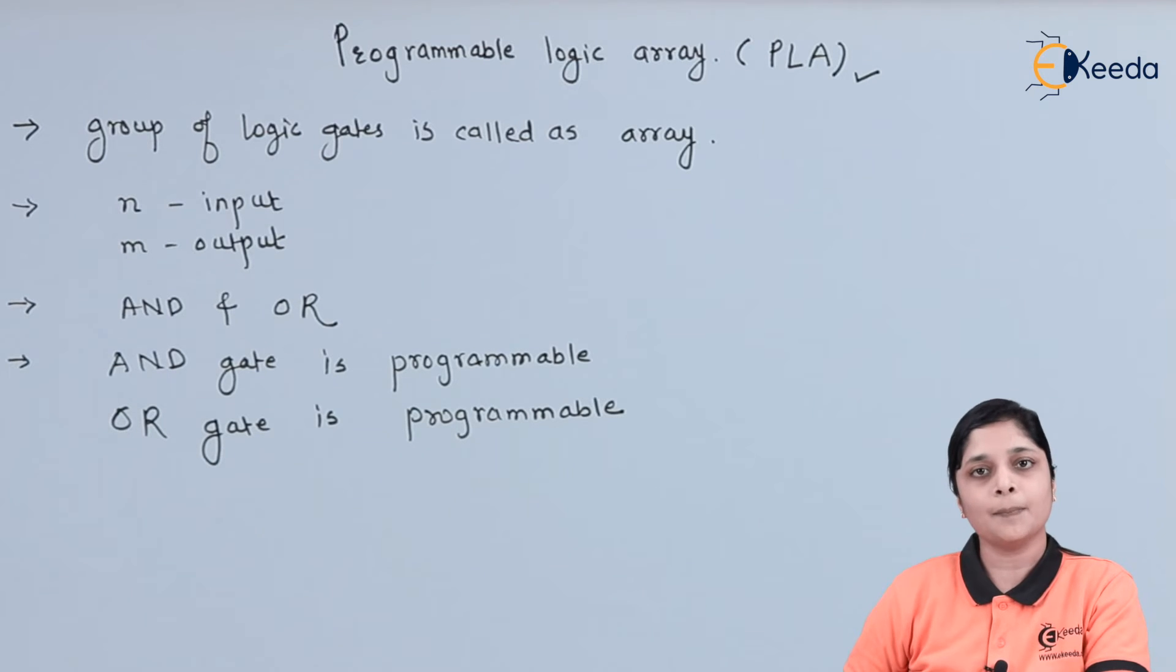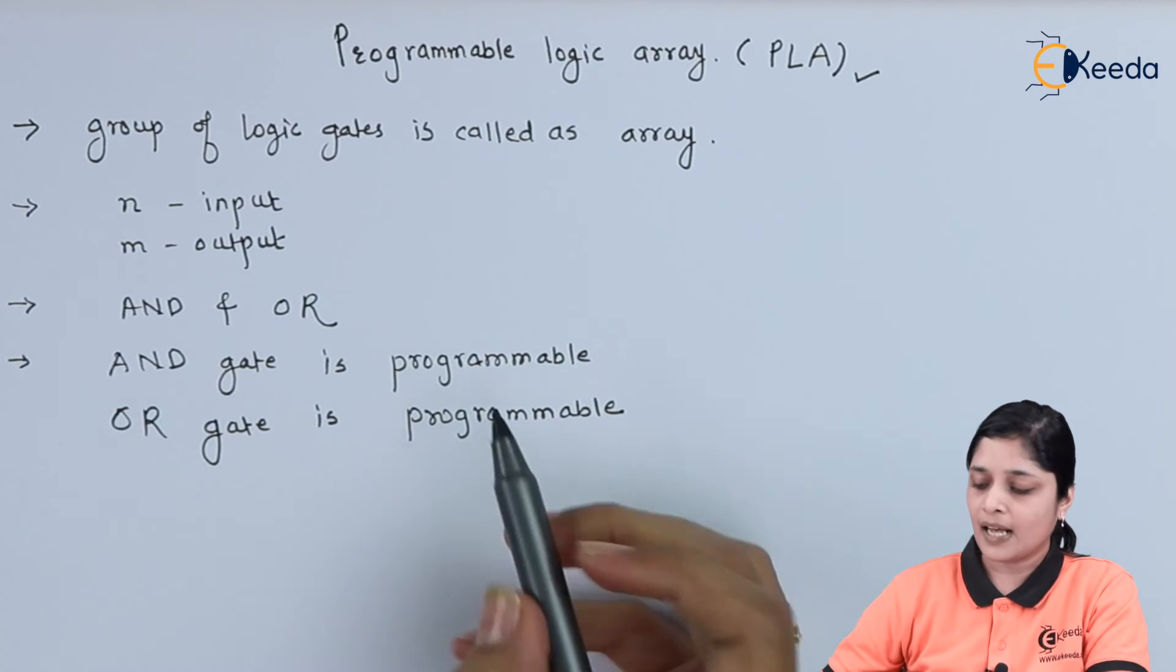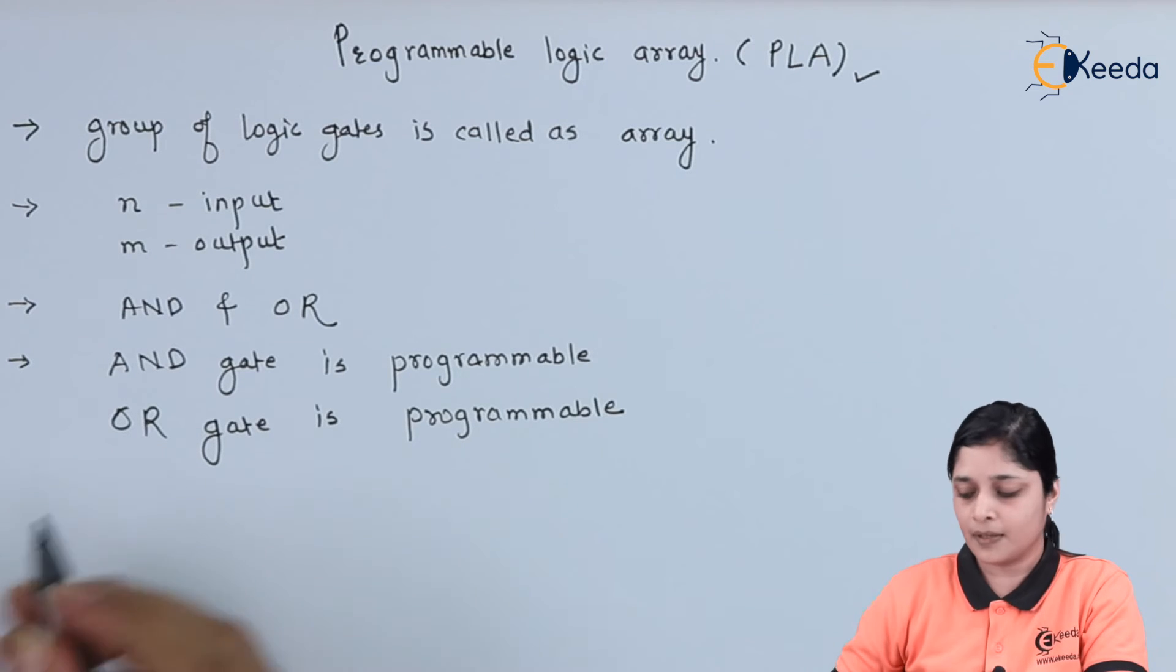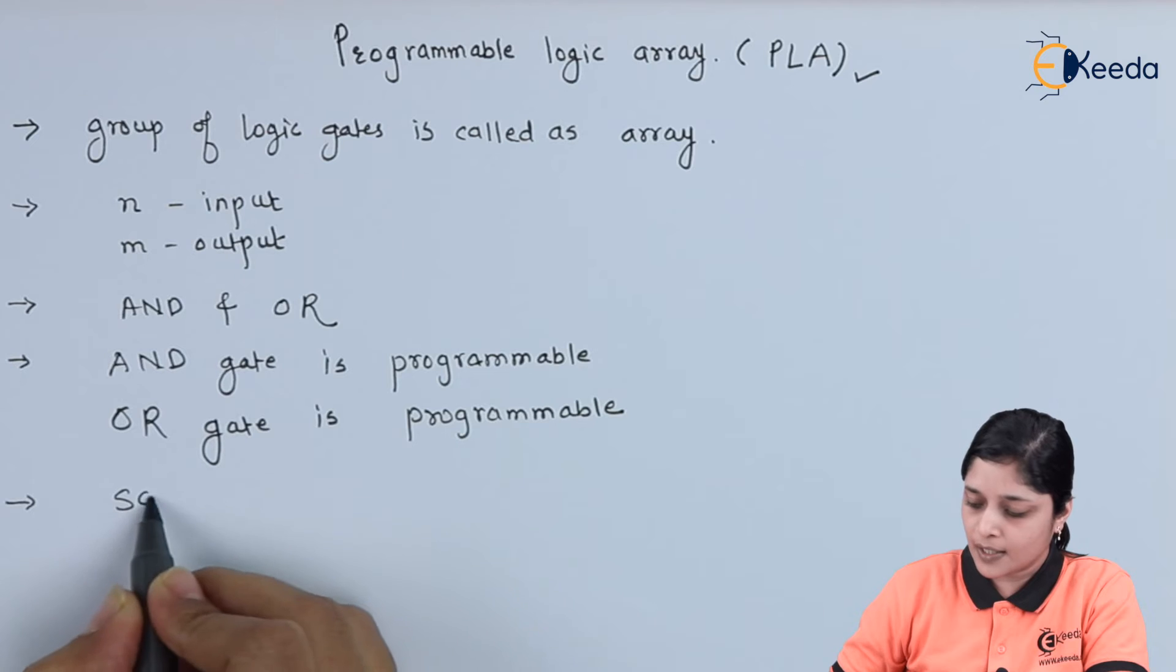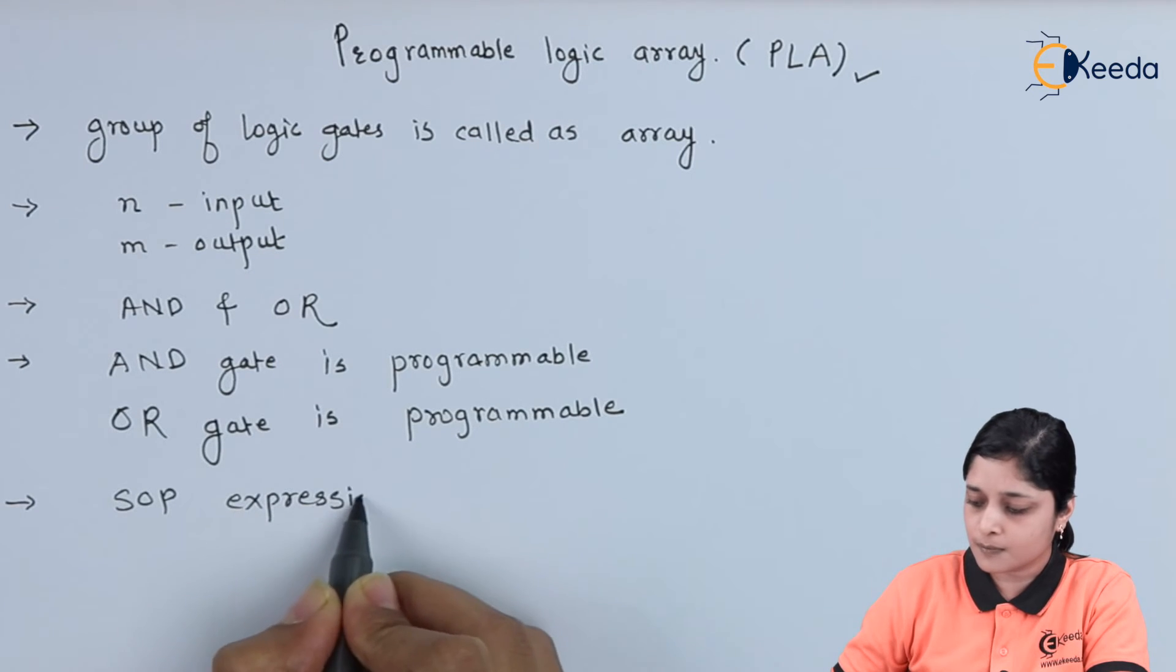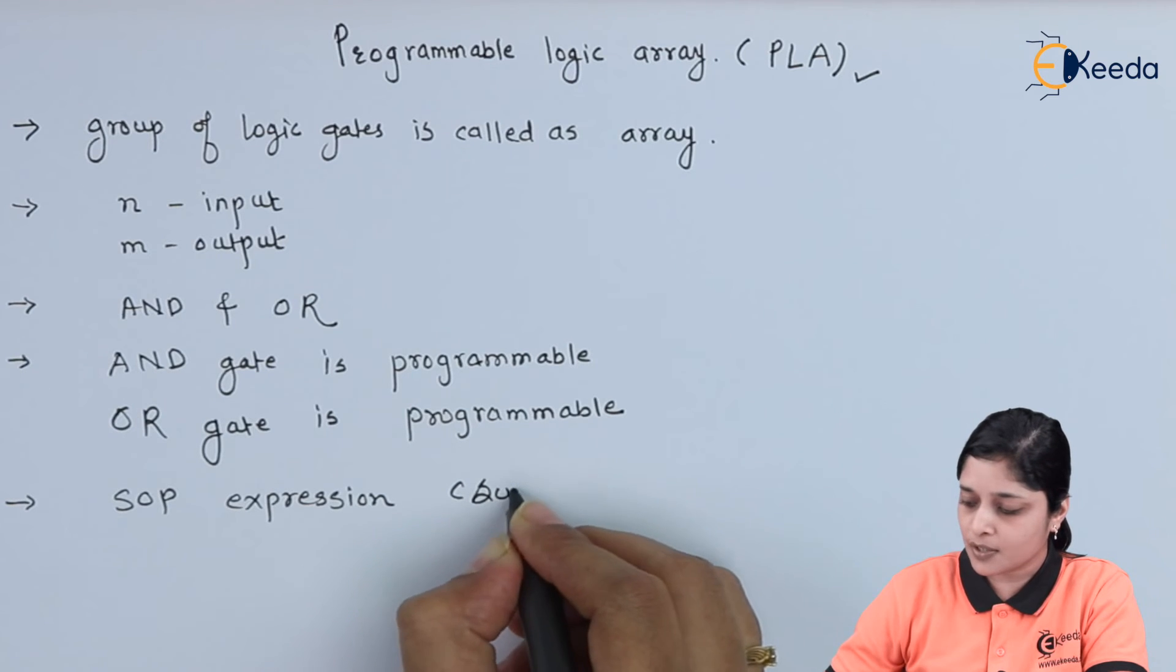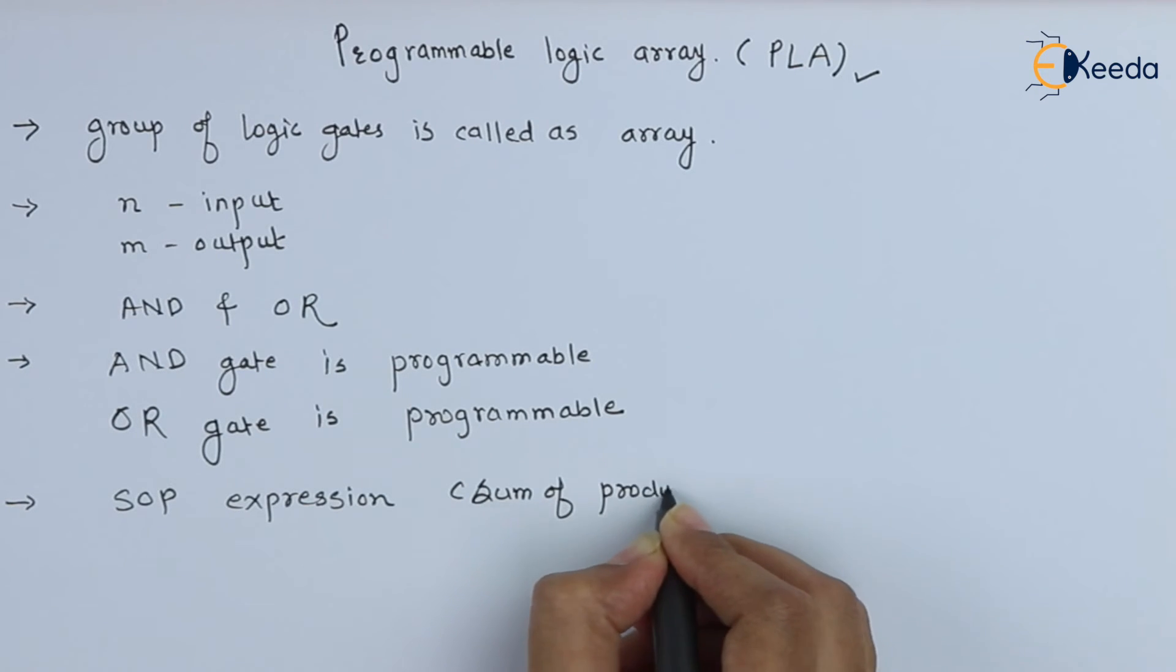PLA implements SOP Expressions. As AND gate and OR gate are Programmable, it will implement SOP Expressions. SOP stands for Sum of Product Expressions.